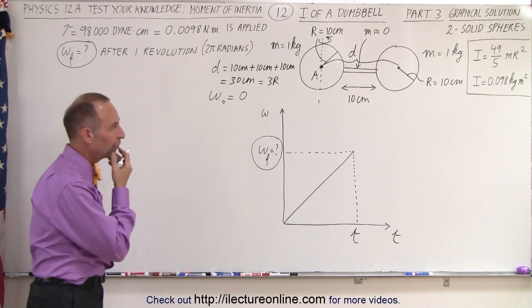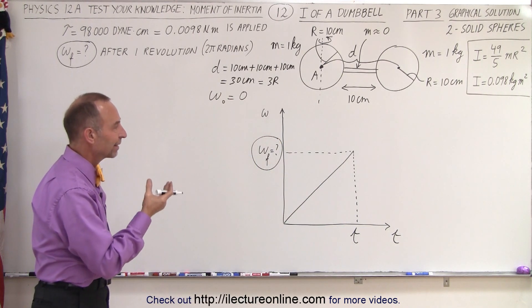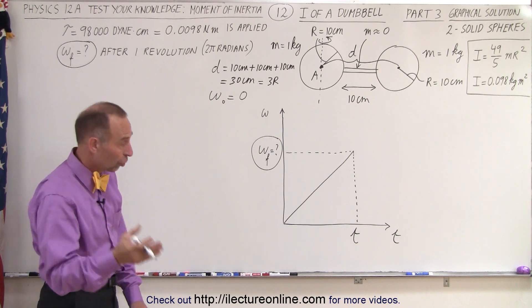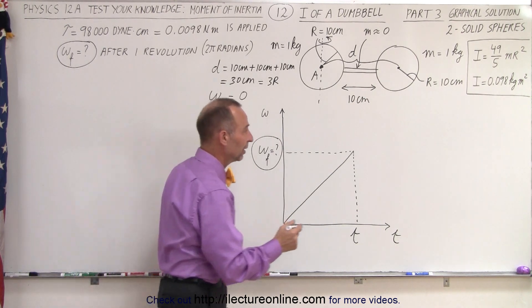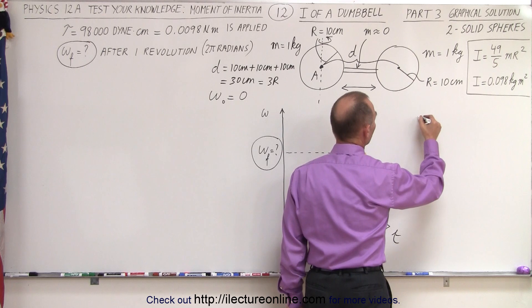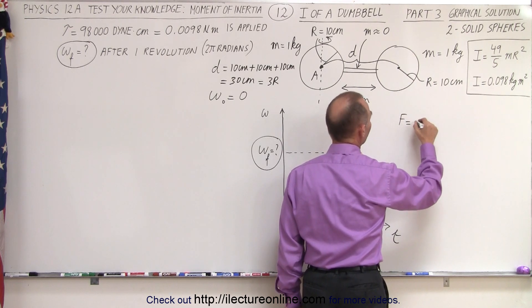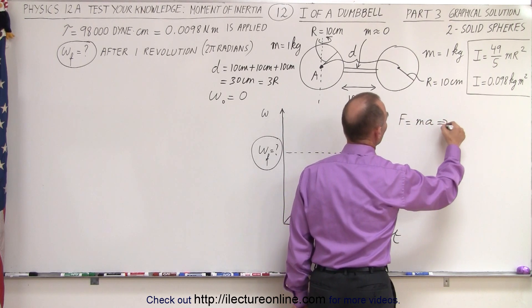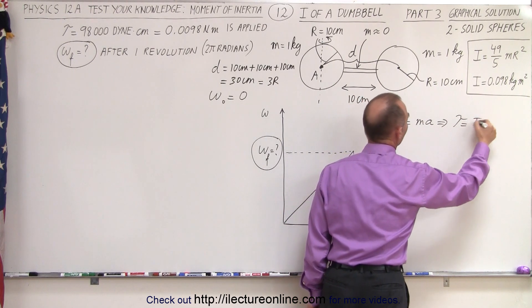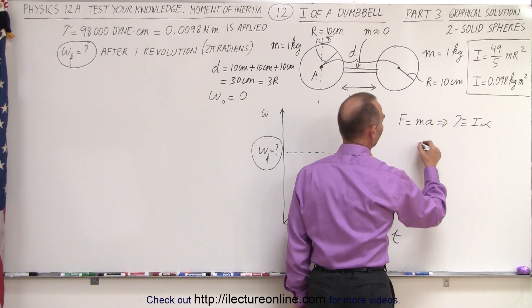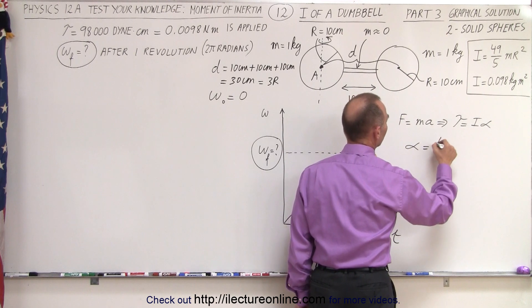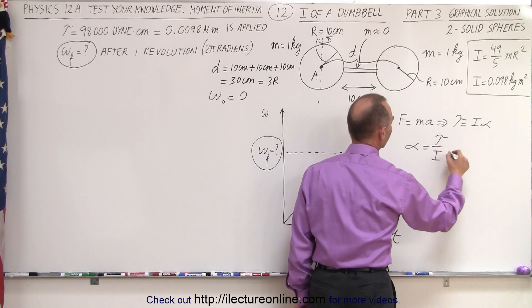Now, what is known? Well, first of all, we need to find the acceleration, because the slope of this graph is acceleration, and we know that we can use the rotational equivalent of F equals ma, which means we can use torque equals I alpha. That means that alpha, the angular acceleration, is equal to the torque divided by the moment of inertia.